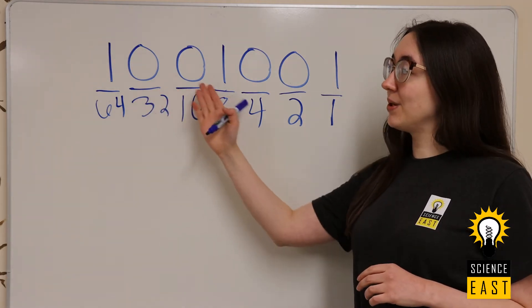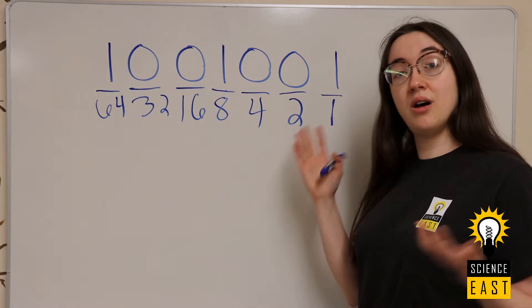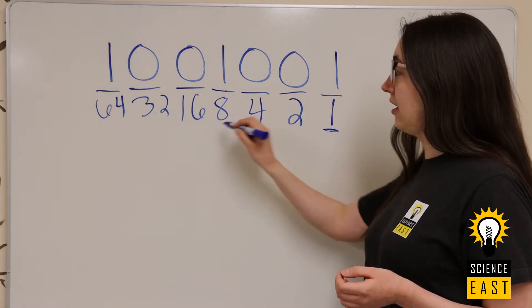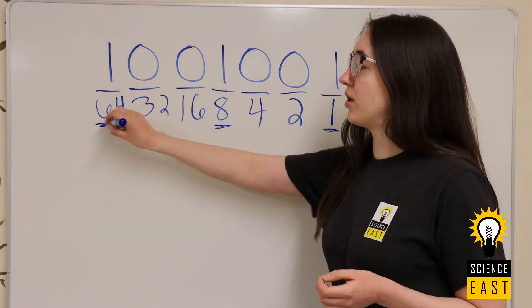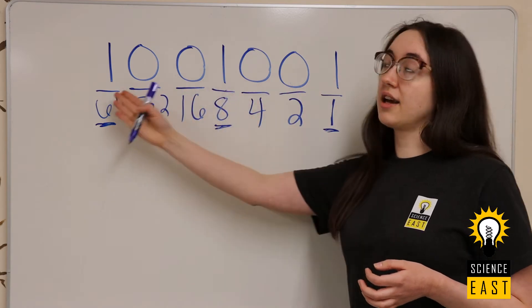We have 1, 0, 0, 1, 0, 0, 1. Which values are on? We have 1, 8, and 64 are on because their digit is 1, 1, and 1.